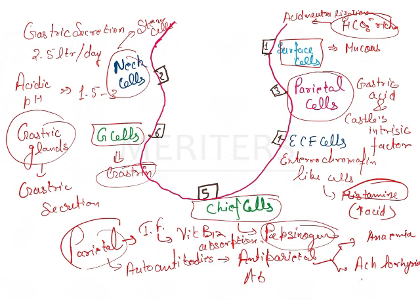With achlorhydria, no acid will be generated. As a result, anemia occurs, and there will be B12 deficiency because you won't be able to get Castle's intrinsic factor, so B12 will not be absorbed.